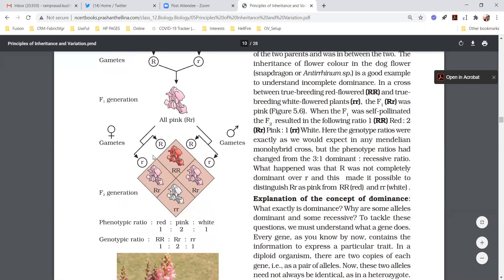When we do Punnett square, when you write a checker board, capital R small r, capital R small r. So capital R capital R, one red flower. Again capital R small r, pink color flower. Again pink, one white.